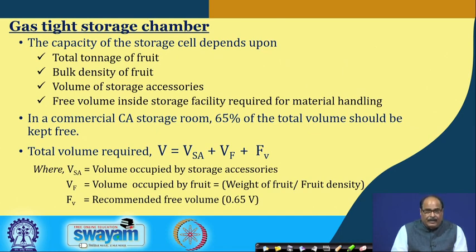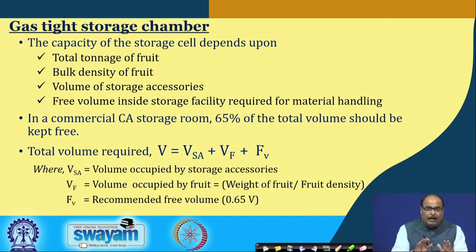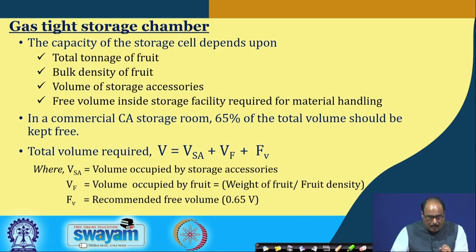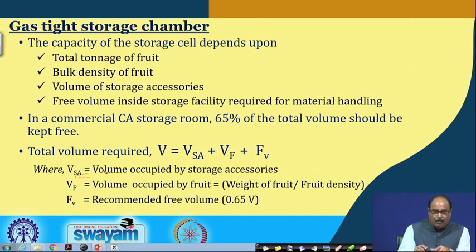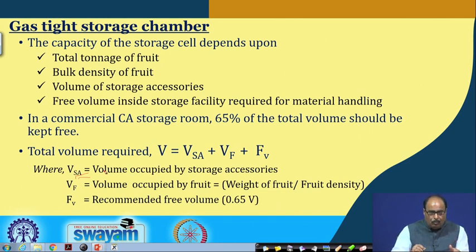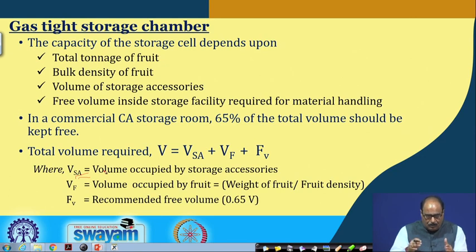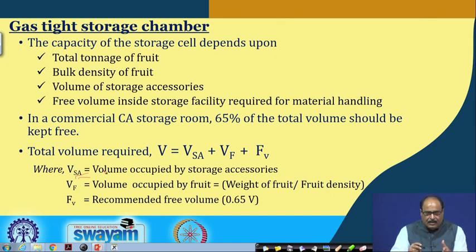As per regulatory requirement, in a commercial control atmosphere storage unit 65 percent of the total volume should be kept free for material movement and other purposes. The total volume of the storage room required can be calculated from the equation: V = VSA + VF + FV, where VSA is the volume occupied by the storage accessories (nitrogen generator, carbon dioxide cylinder accessories, sensors, etc.), VF is the volume occupied by the fruit or food determined by weight divided by density, and FV is the free volume required, which is 0.65V.